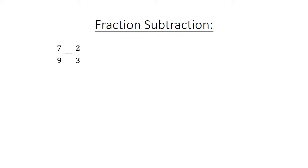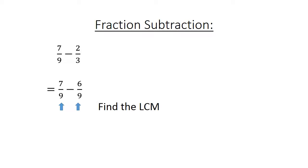Fraction subtraction: 7 over 9 minus 2 over 3. Find the lowest common multiple. The result equals 1 over 9.